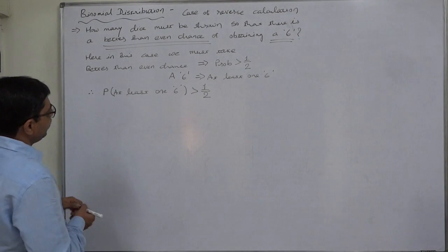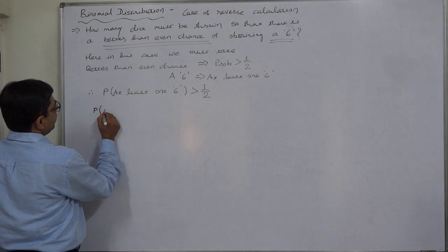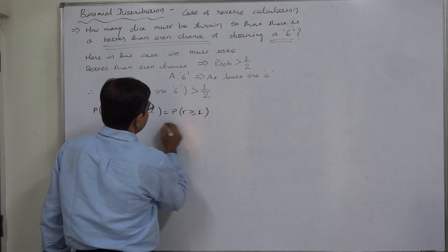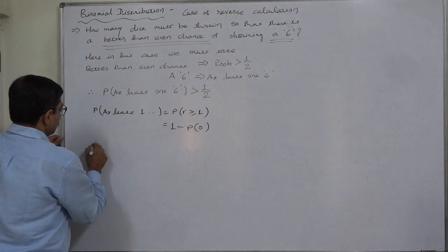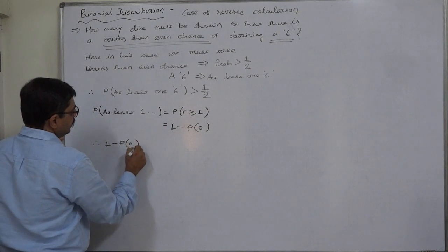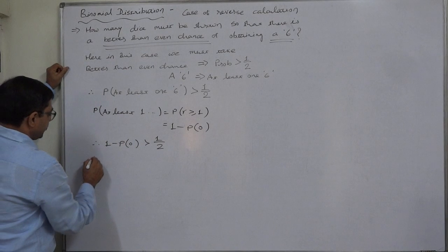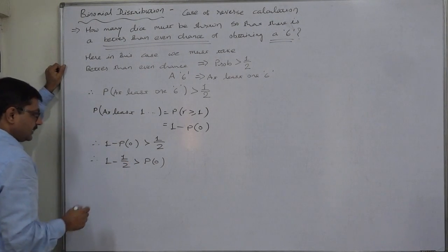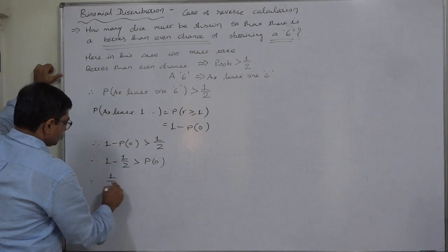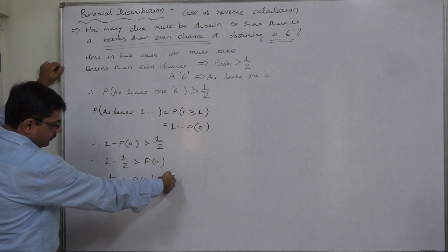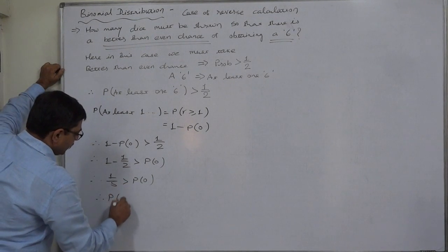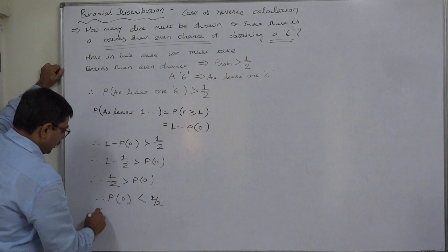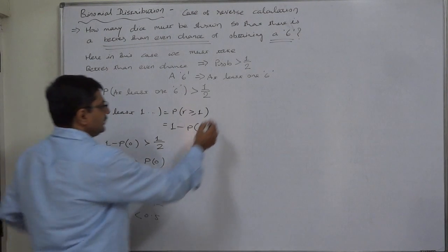We know that the probability of at least one equals P(R ≥ 1), which equals 1 minus P(0), i.e., one minus the probability of none. So 1 minus P(0) is greater than one half. Therefore, one minus half is greater than P(0). Reading from right to left, we can say that P(0) is less than half, or P(0) is less than 0.5.